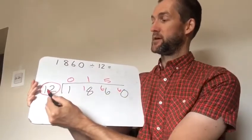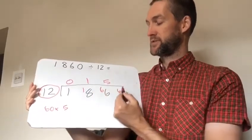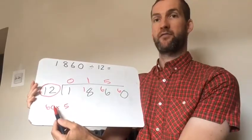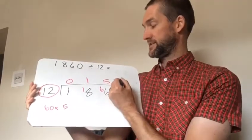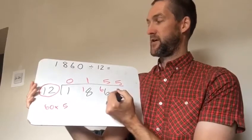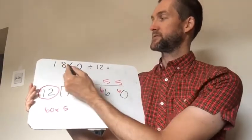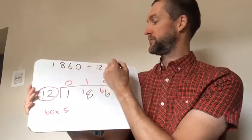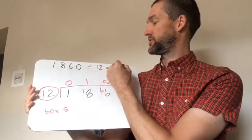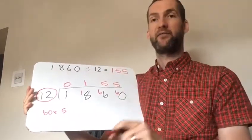Then last calculation, how many times does 12 go into 60? Well we already know that 12, 5's are 60. So that is 5. So our answer to 1860 divided by 12 is 155.